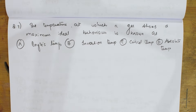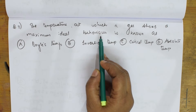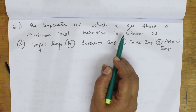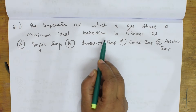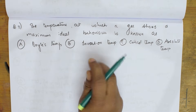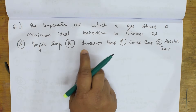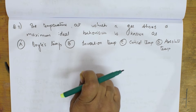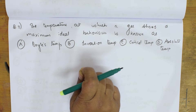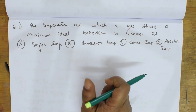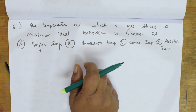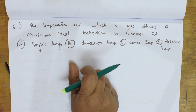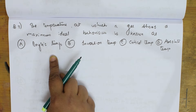Let's do the next question. They've given us the temperature at which a gas shows maximum ideal behavior. This is a very famous question — the temperature at which a gas shows maximum ideal behavior for a considerable range of pressures. This is Boyle's temperature.